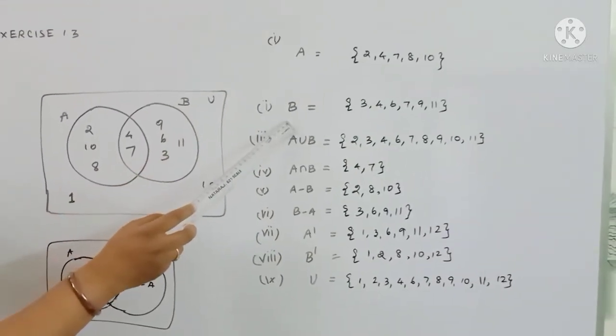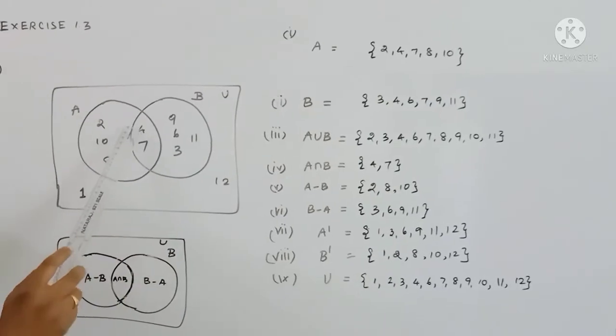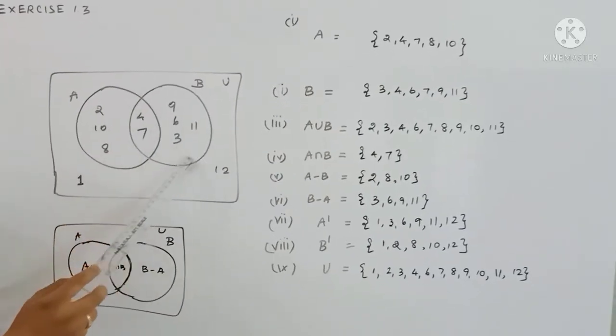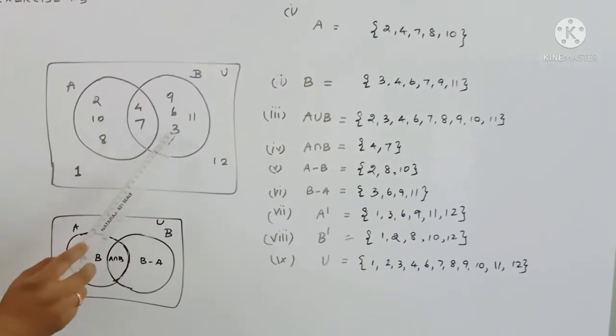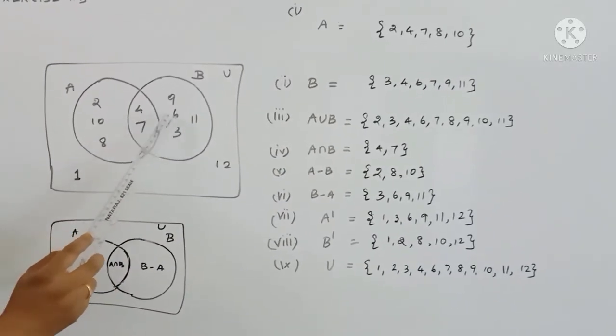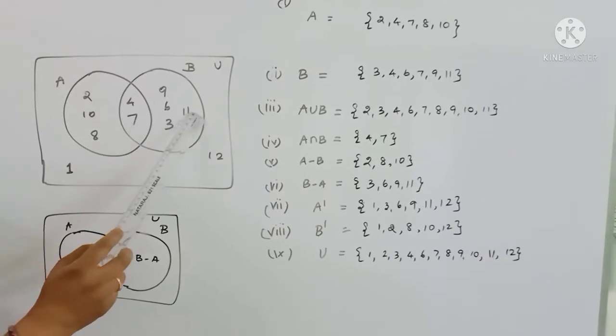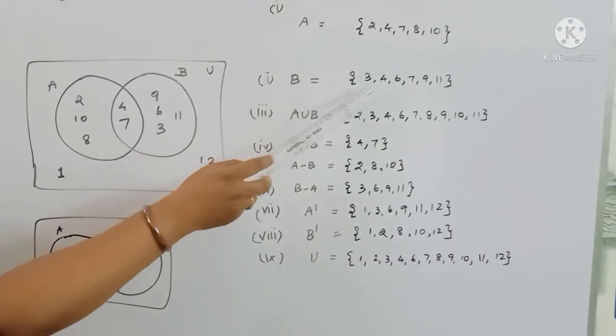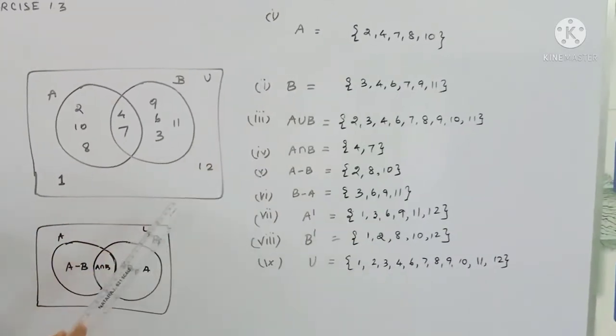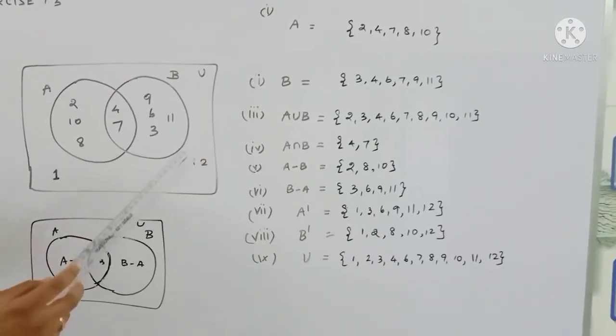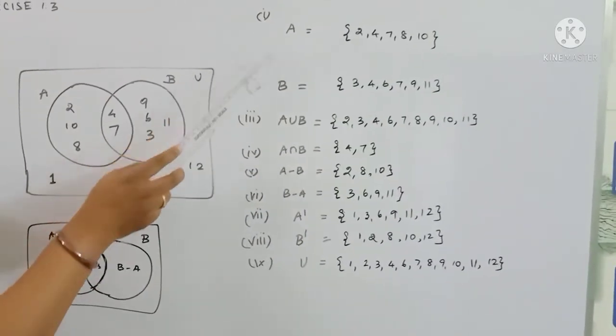Next, the B set. B contains: 3, 4, 6, 9, 7, 11. So B = {3, 4, 6, 7, 9, 11}.